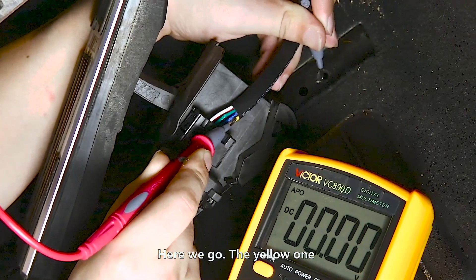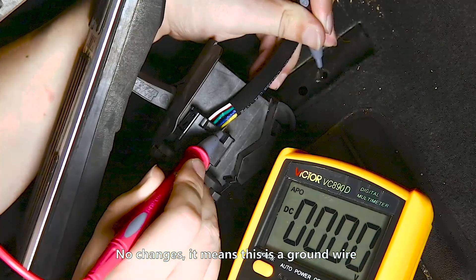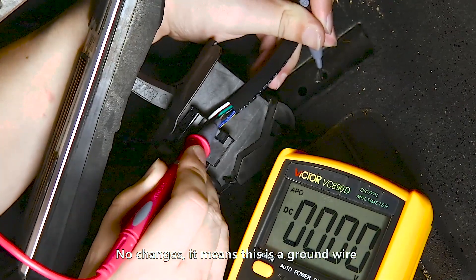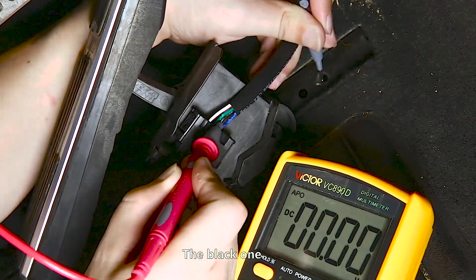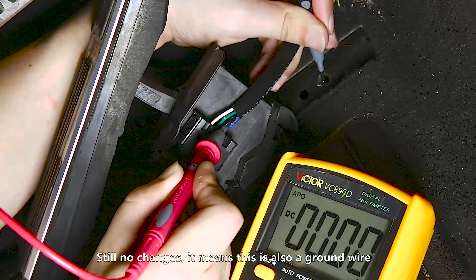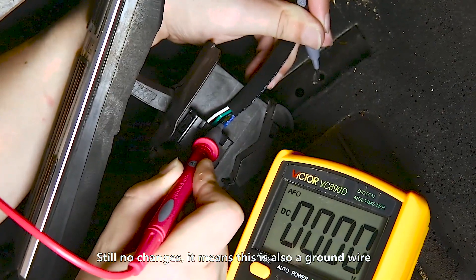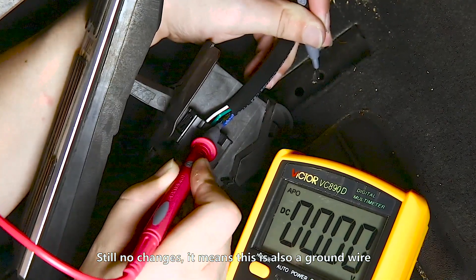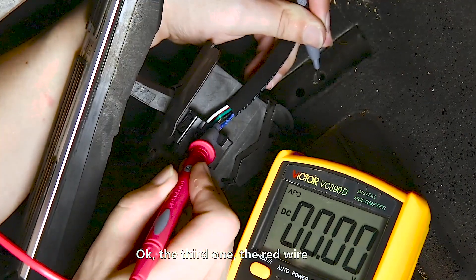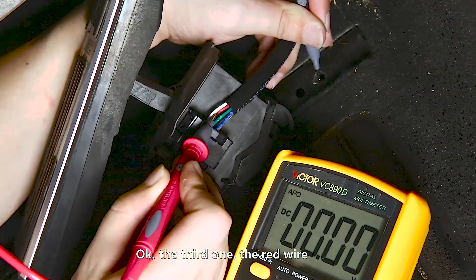Here we go. The yellow one. No changes. It means this is a ground wire. Black one. Still no changes. It means this is also a ground wire. The third one, the red wire.